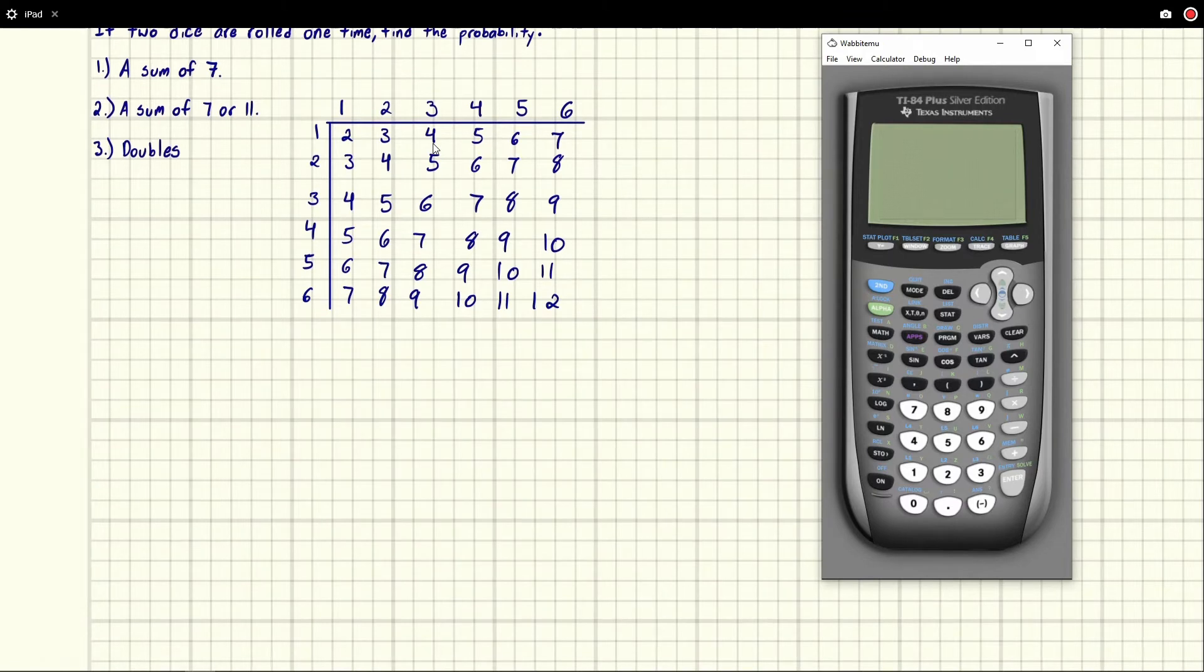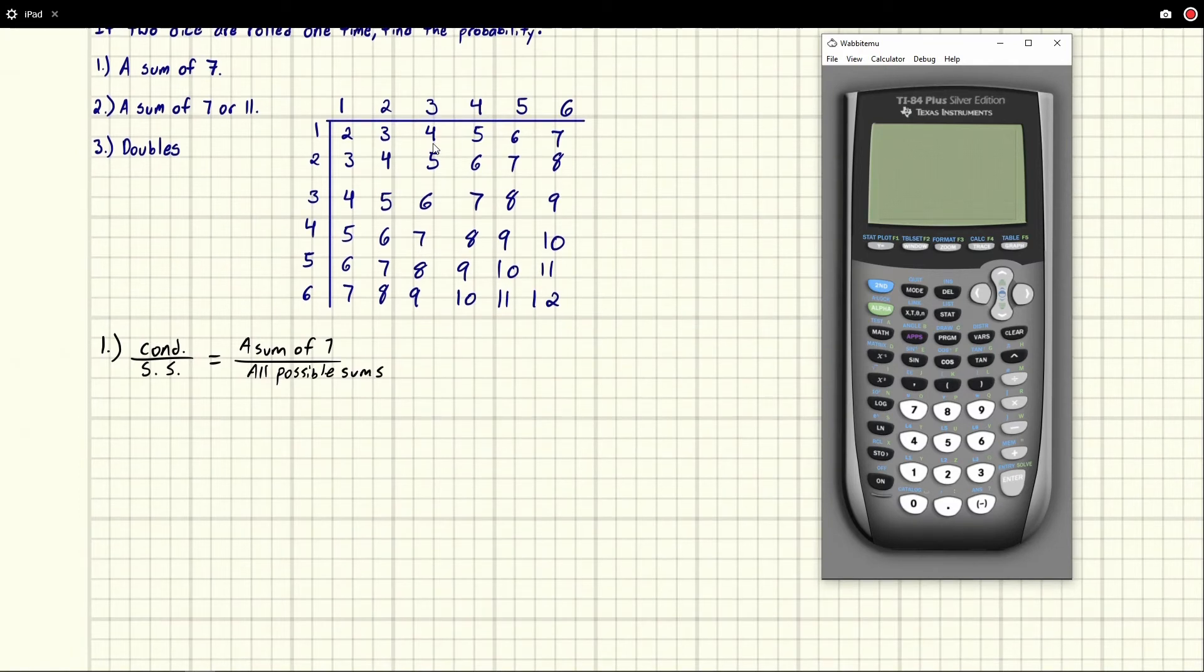And so in this way we can very quickly find the sums. So when it comes to two dice, this is a great way to do it. So for part one, now that we have our fancy chart, we're going to do part one, a sum of seven. So we say okay, a sum of seven. Well, here our sample space, right? So it's condition over sample space. So our condition is a sum of seven, and our sample space is all possible sums.